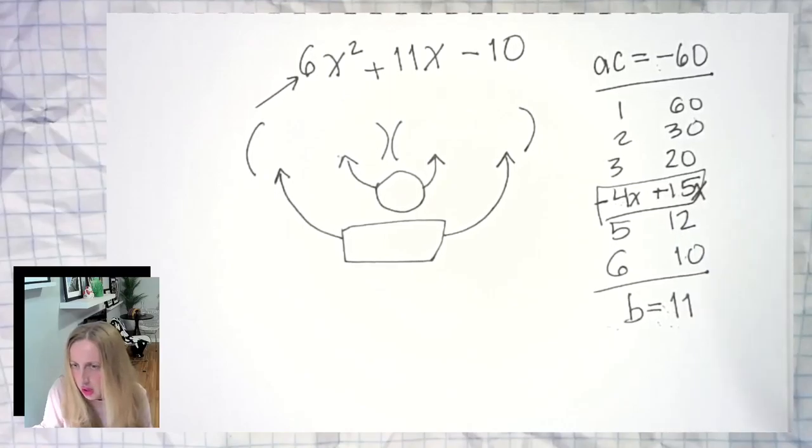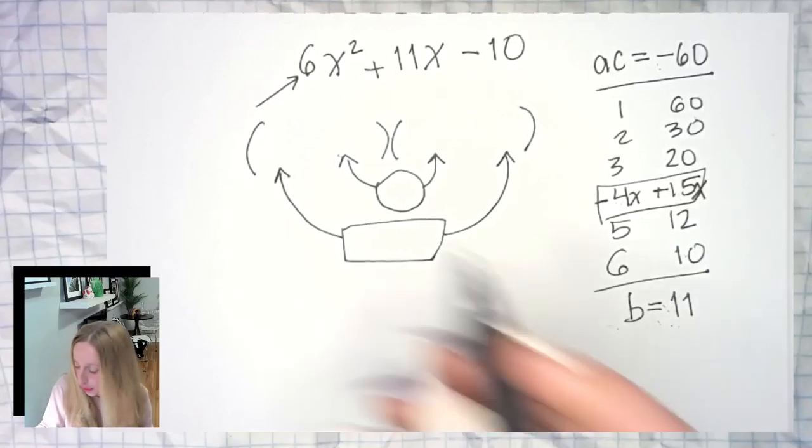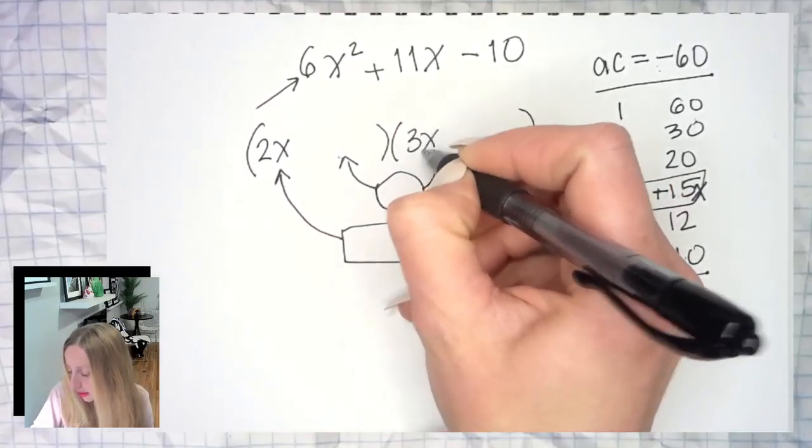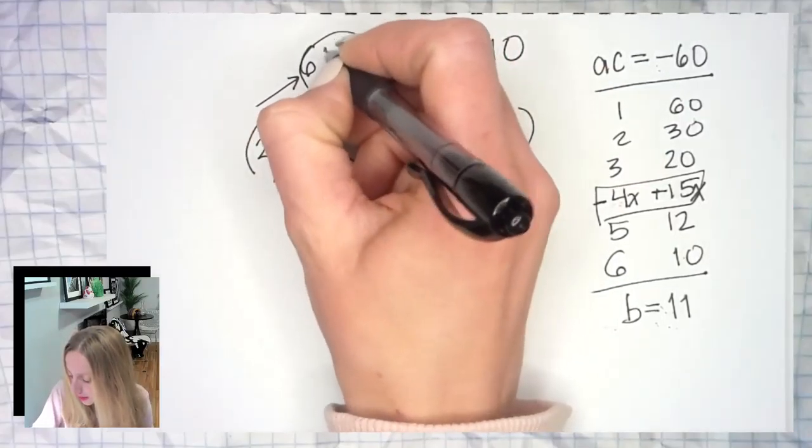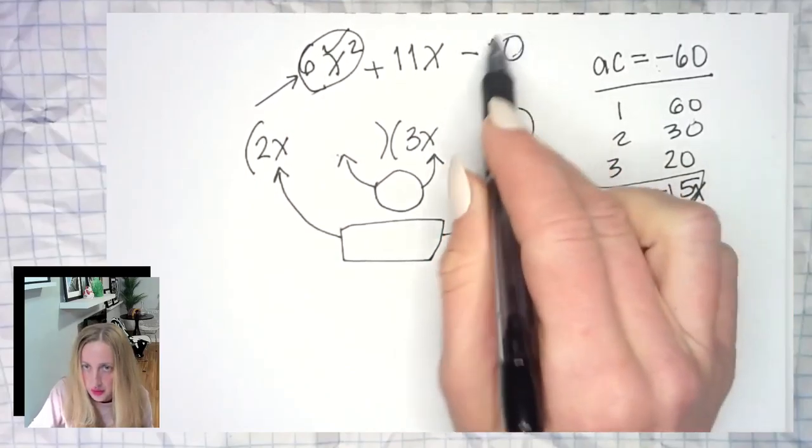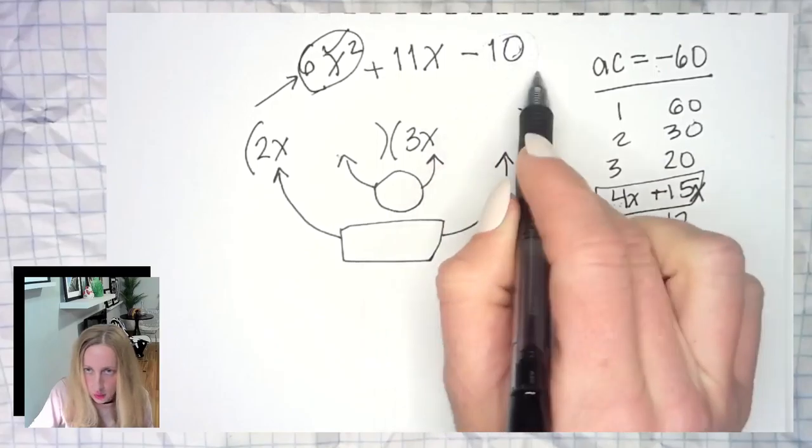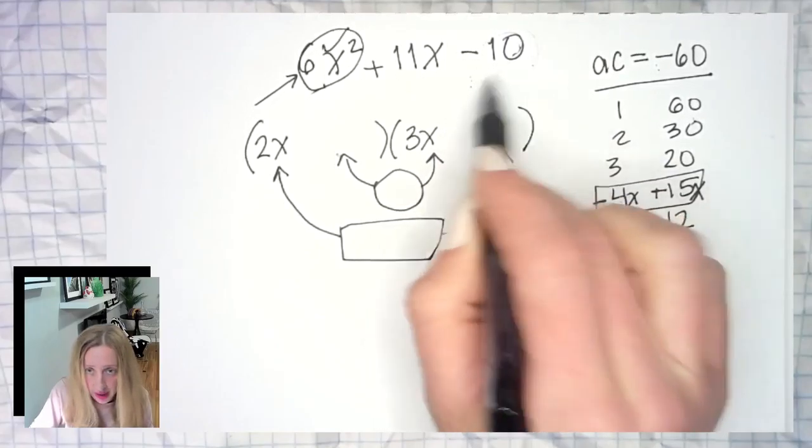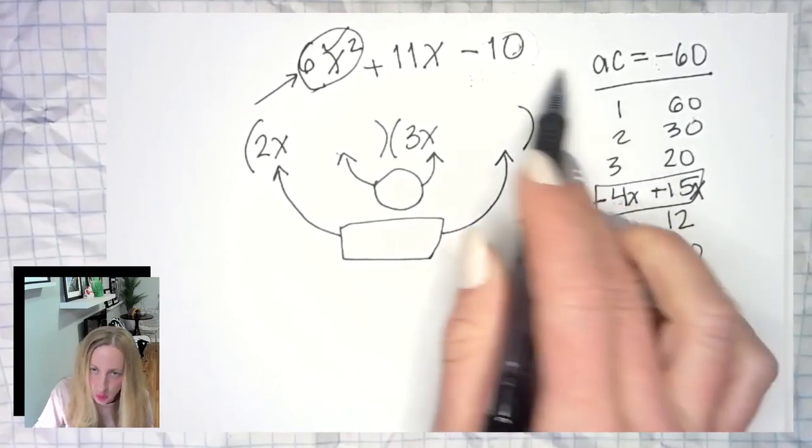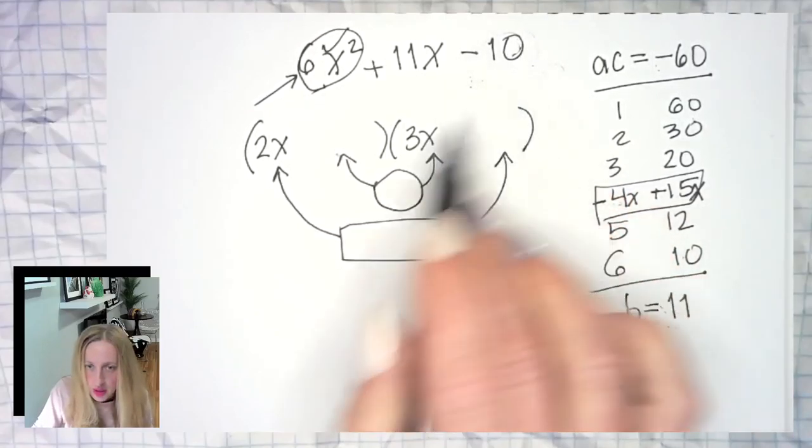So I'm gonna go like this: 2x, 3x. Does that give us 6x²? Yes, check. That part's taken care of. Next I need to pick from the numbers I know to make 10. 10 and one, or two and five. And then order matters. But 10 doesn't go into any of these either. So we're looking more two and five.